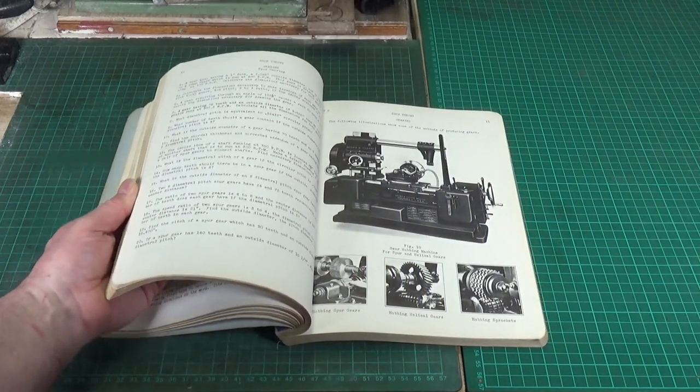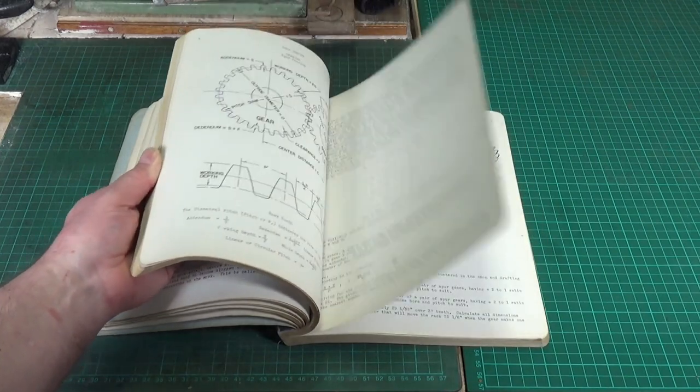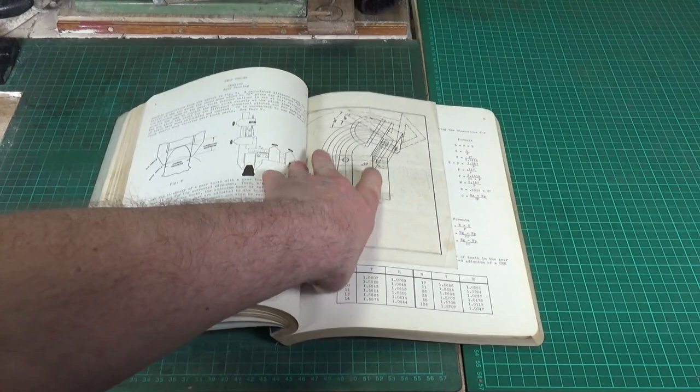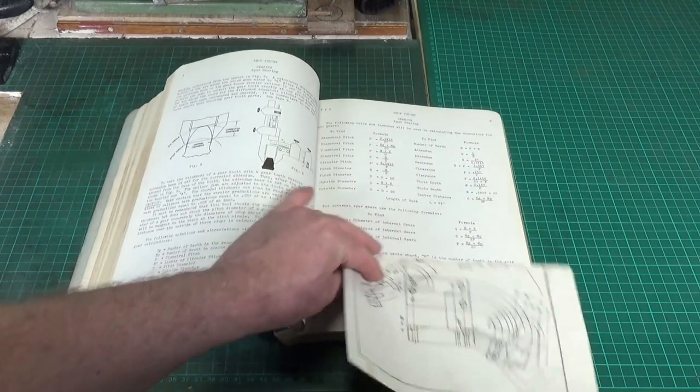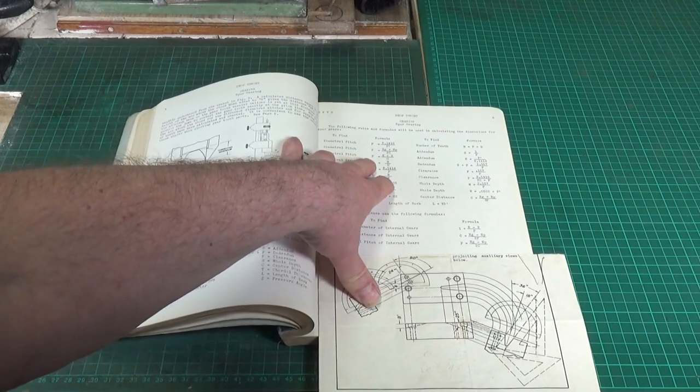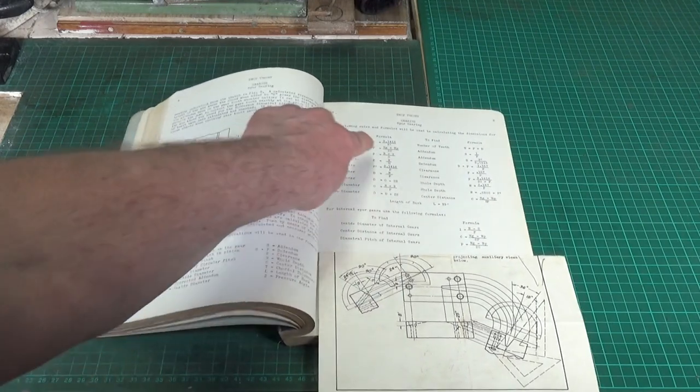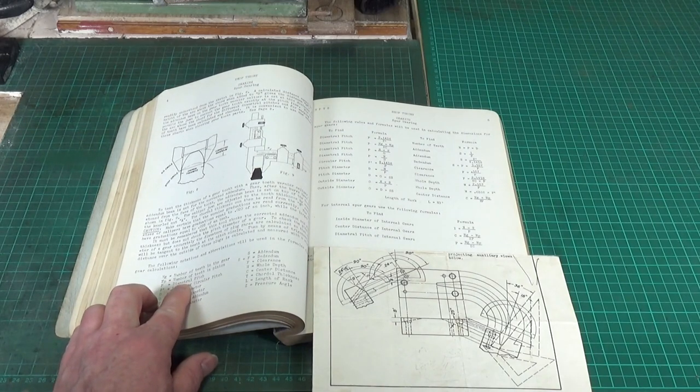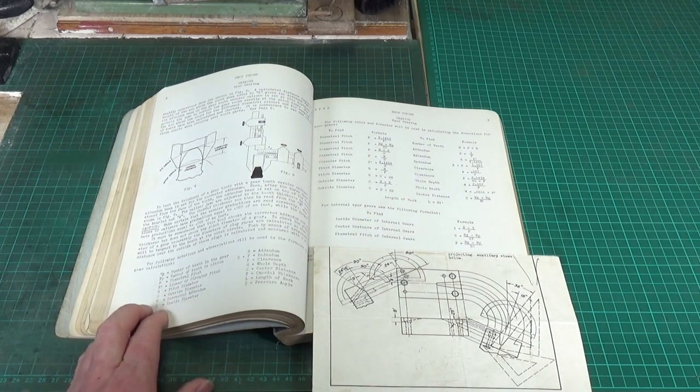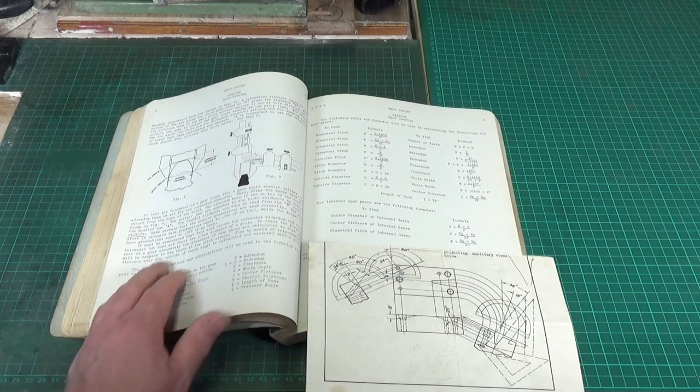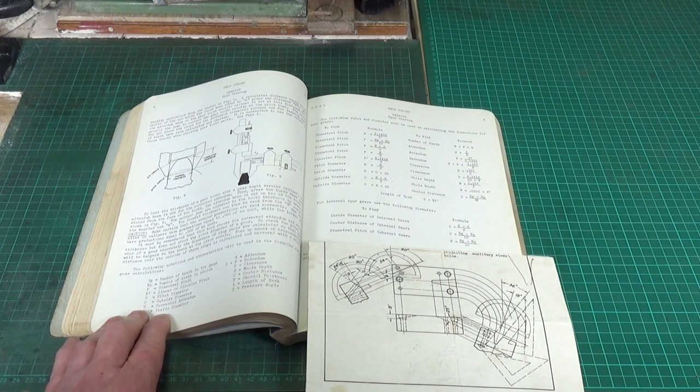It obviously goes into lathes and milling machines and all sorts of stuff and gearing. This is the page that Dave showed on his video. This is, I think that was the one he went for: diametrical pitch.